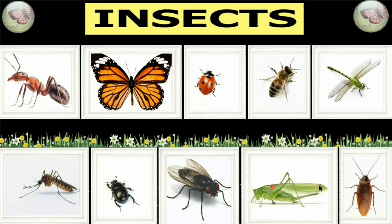For example, if you see the cockroach, how many legs does it have? Let us count: one, two, three, four, five, and six. Cockroach has six legs. Likewise, all these insects have six legs.